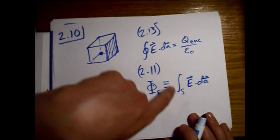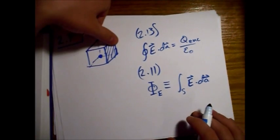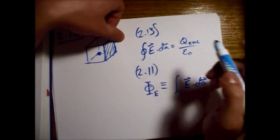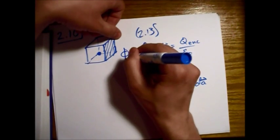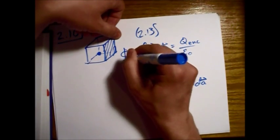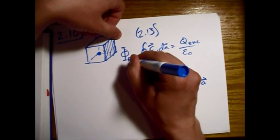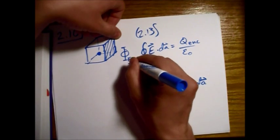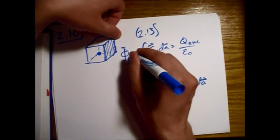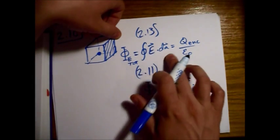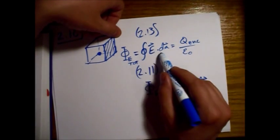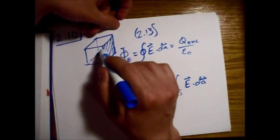Alright, so basically, if we integrate over the whole surface, we can say the total flux is equal to this integral over the whole surface enclosing this point.